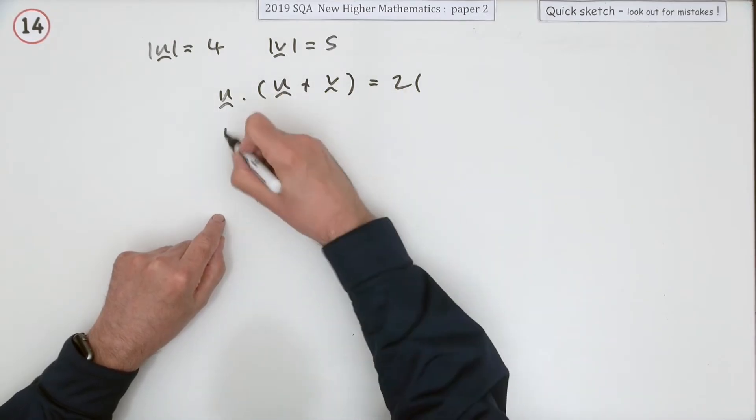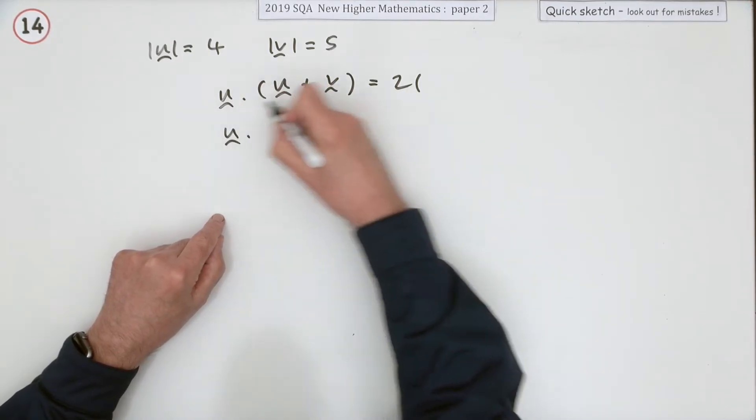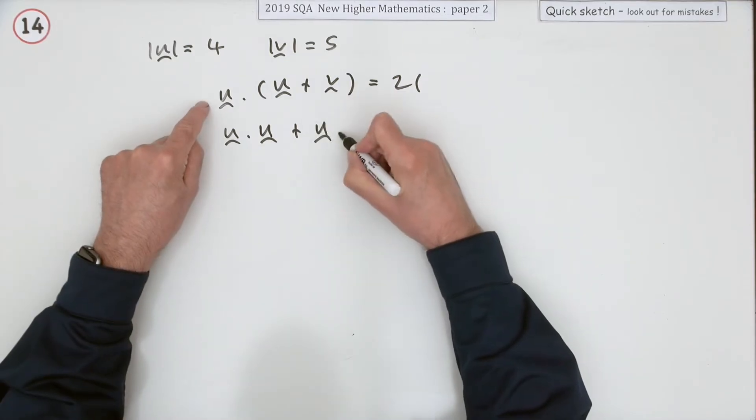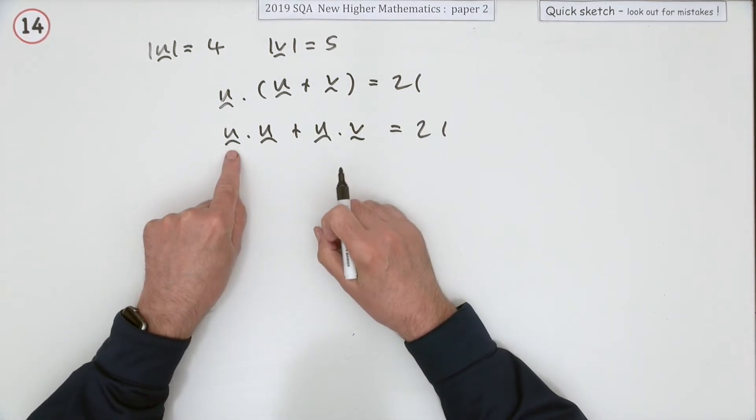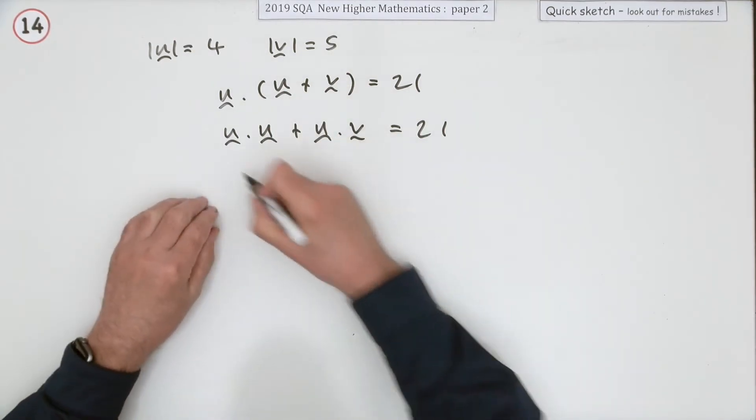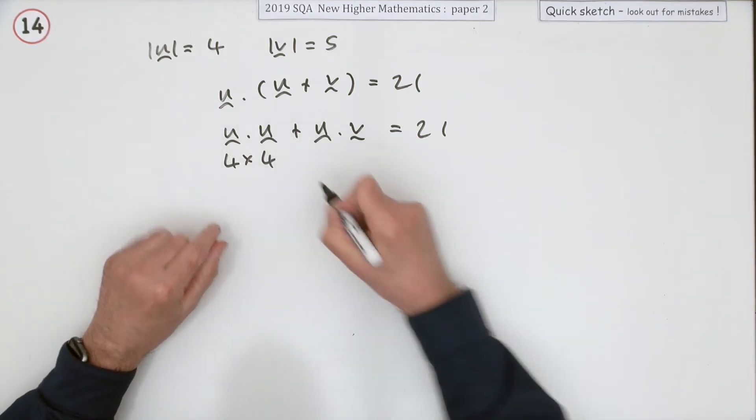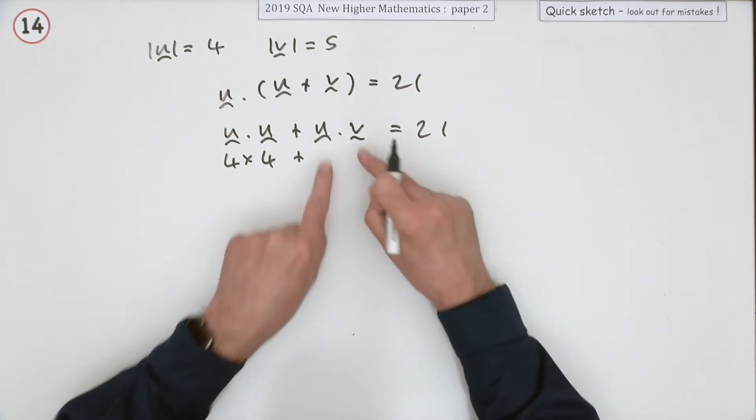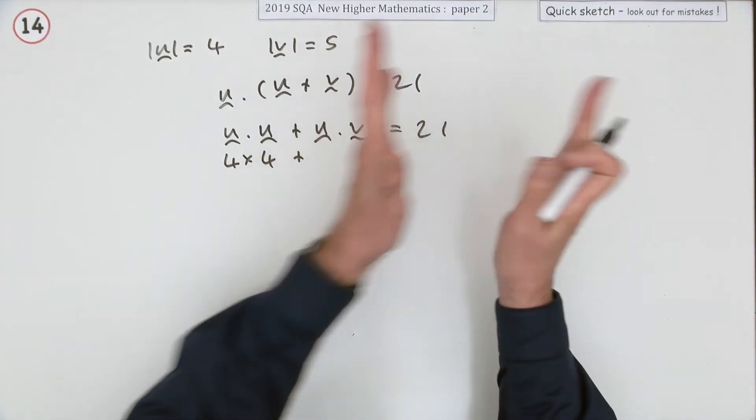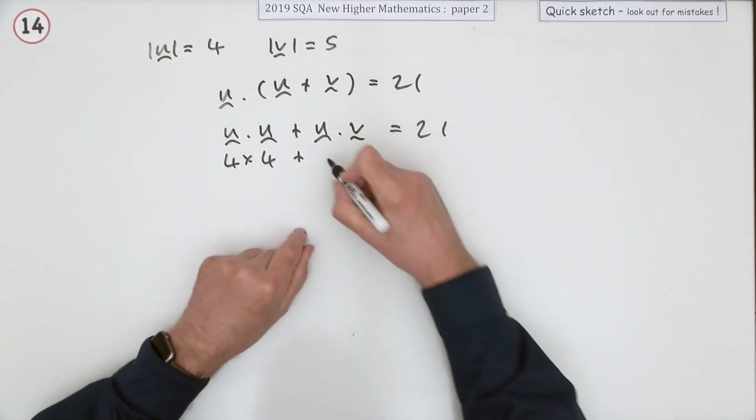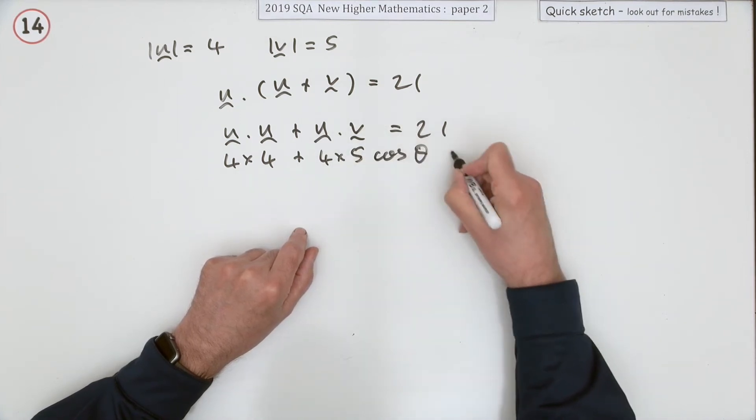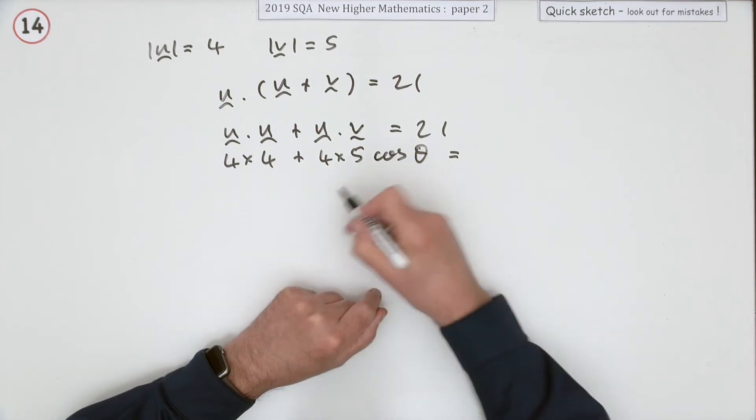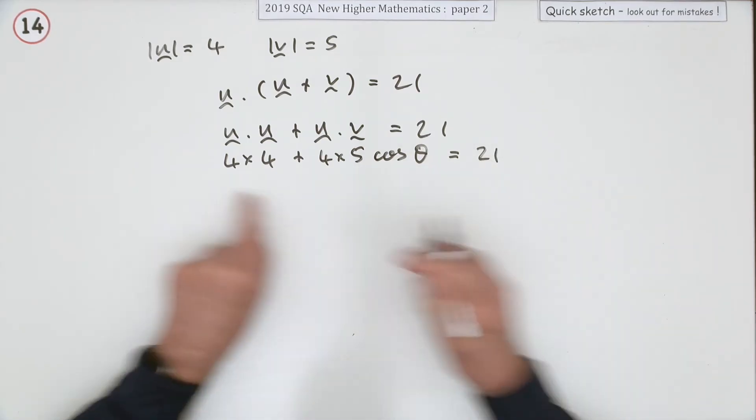Well, multiply that out. It's associative: u dot u plus u dot v is equal to 21. Now the scalar product of a vector times itself, because they're parallel with each other, is all of the magnitude times all of the magnitude. However, the scalar product of a vector with a different vector will be yes, the product of the magnitudes, but also times the cosine of the angle in between, and that should come to 21. So there's the equation that's got the angle in it.